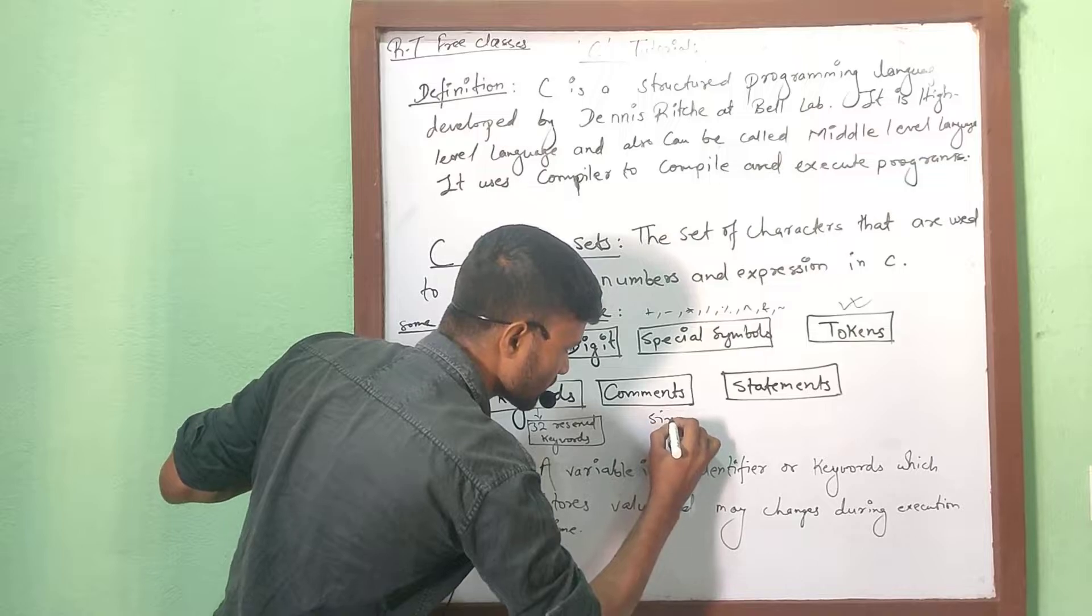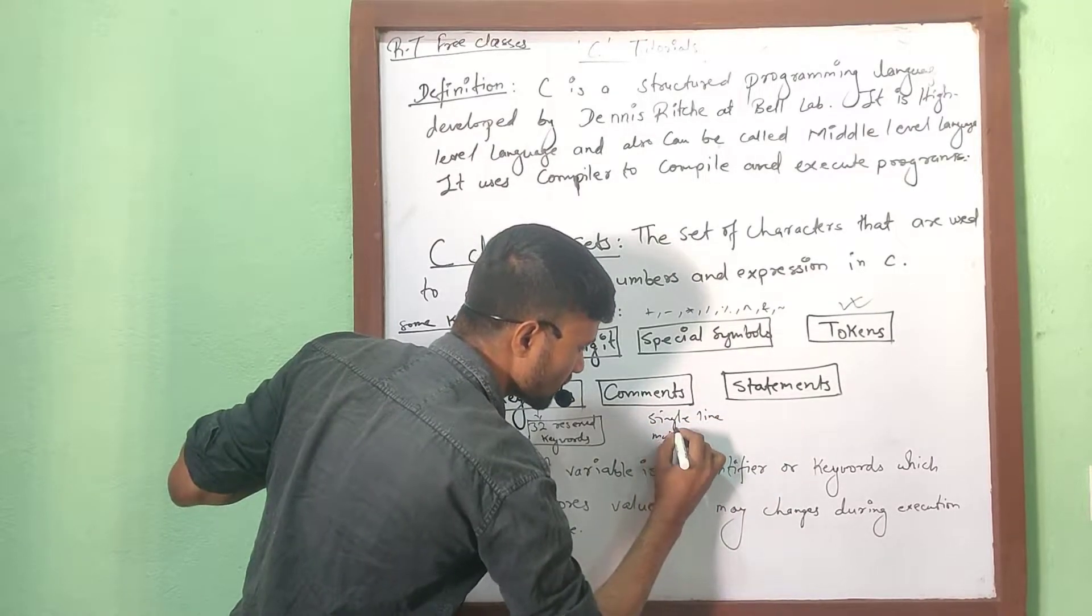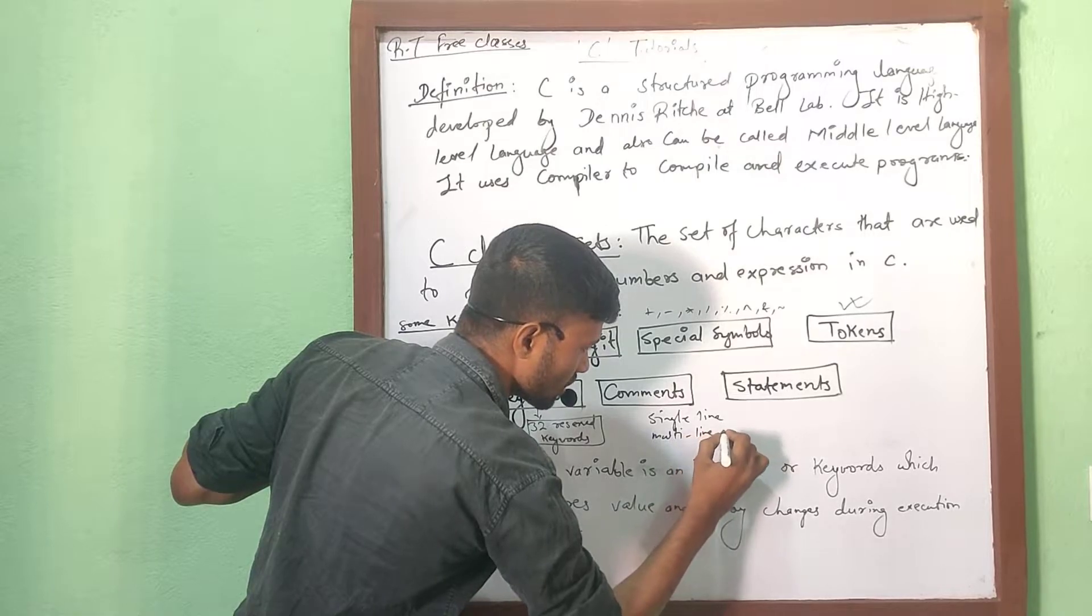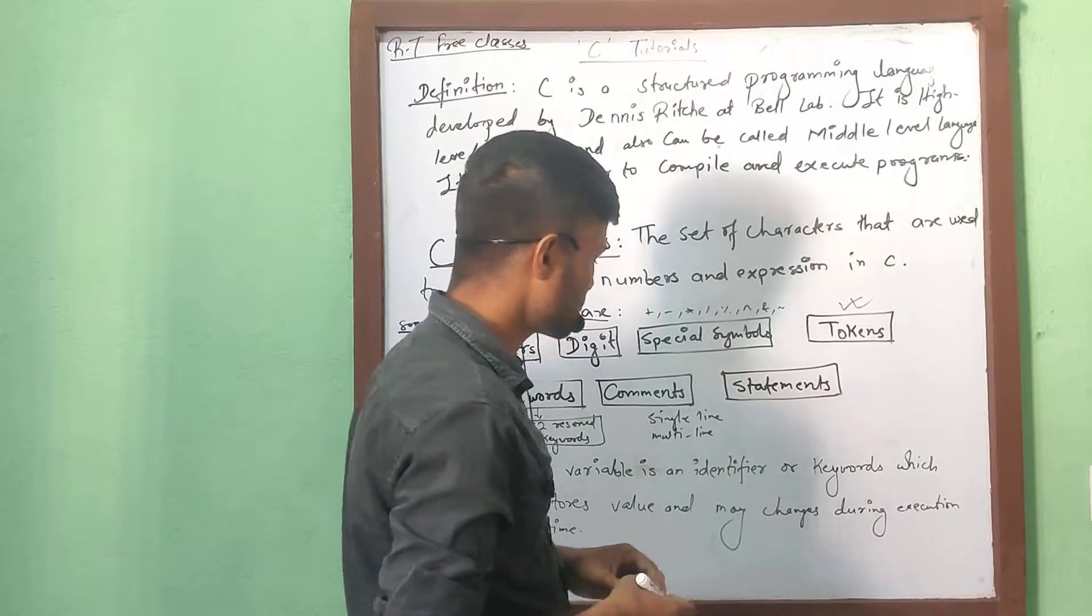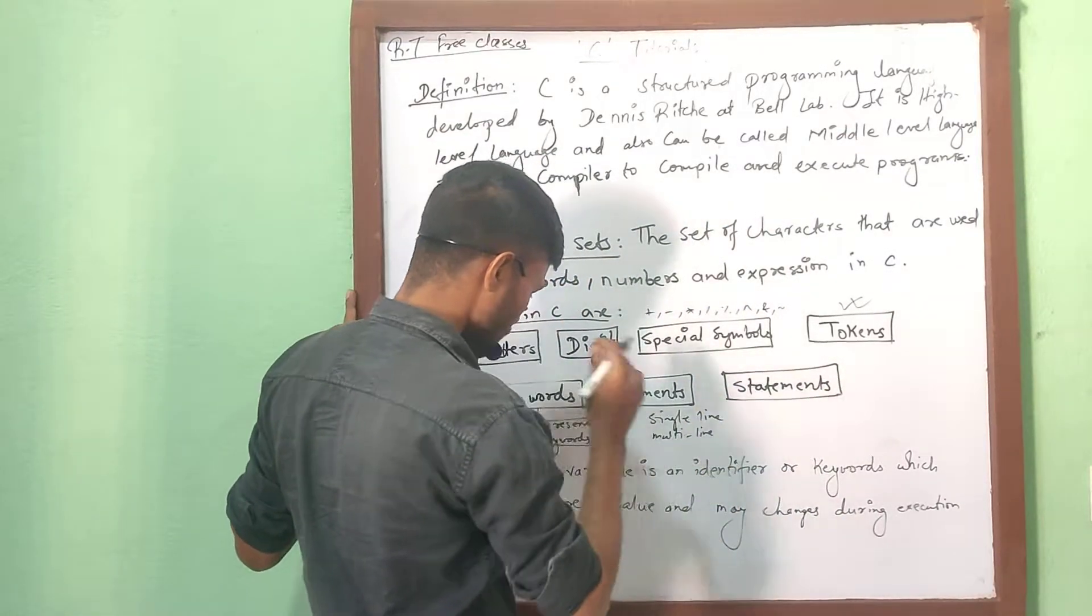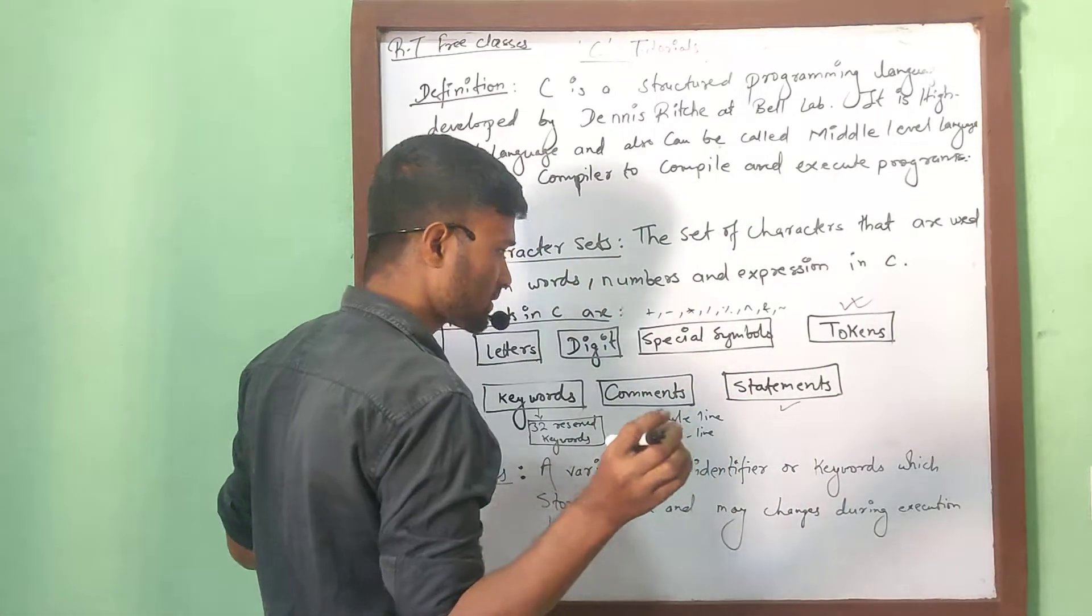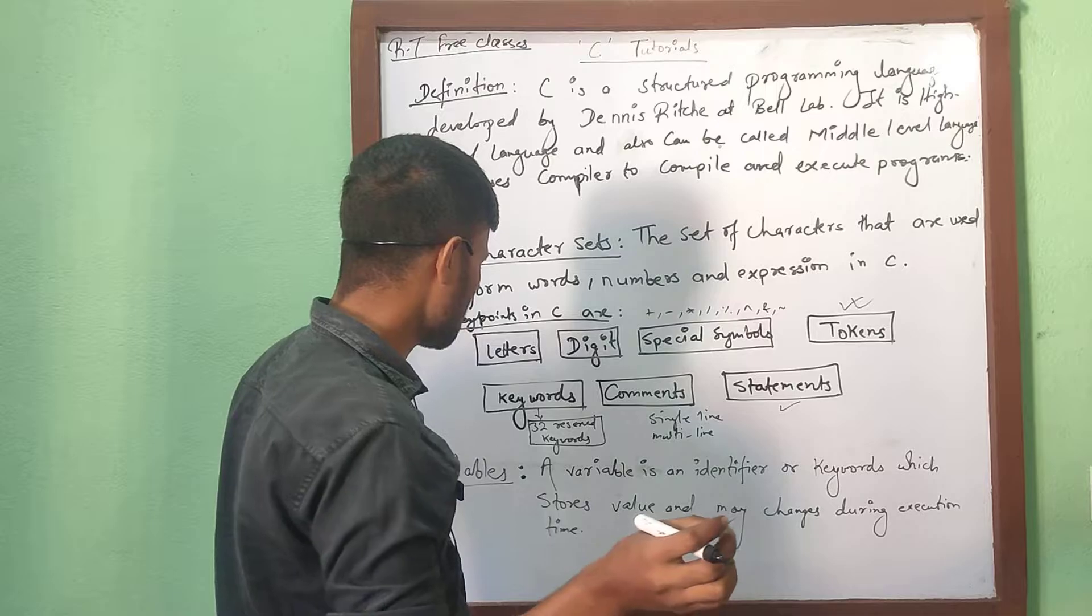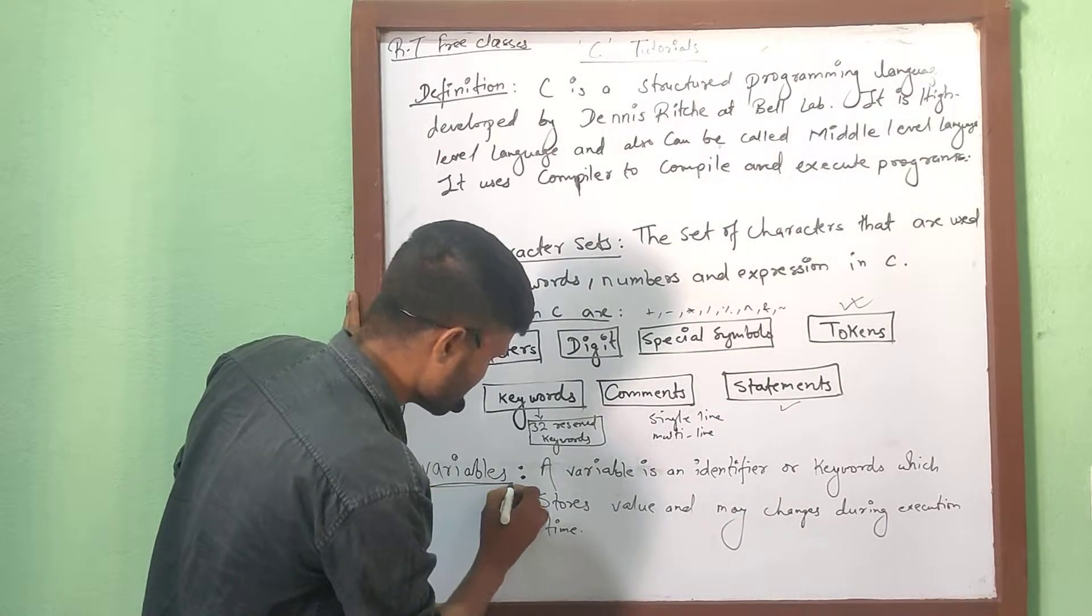There are two types of comments, that is single line and multiline. Today we are going to discuss only the introductions. So I am not showing its examples. Now let's talk about, single line in a program is called statements. And we are giving some introductions about the variables, just briefly.